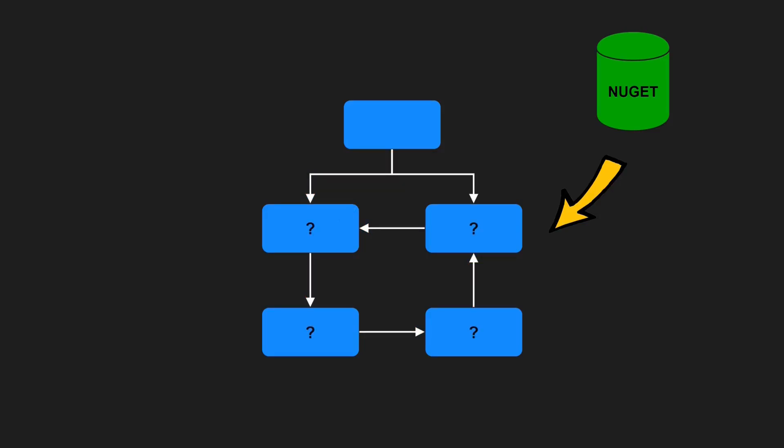Furthermore, cyclic dependencies can even lead to non-deterministic behaviors in your software. For instance, suppose your components need to be initialized during the startup of your system. In which order should that happen?